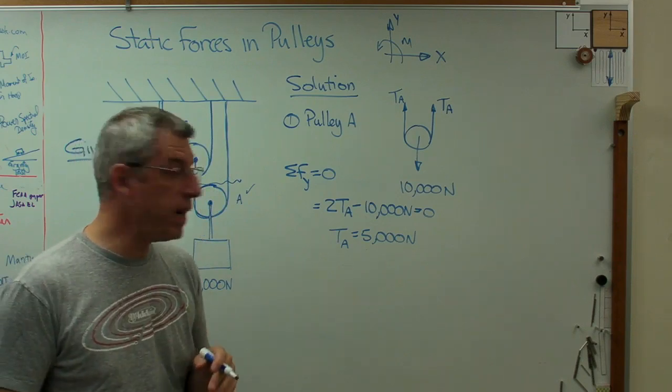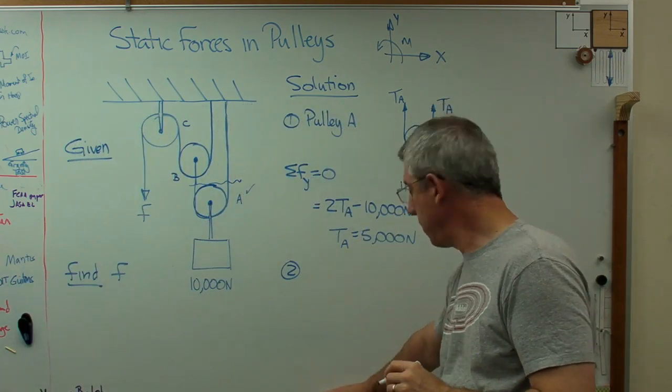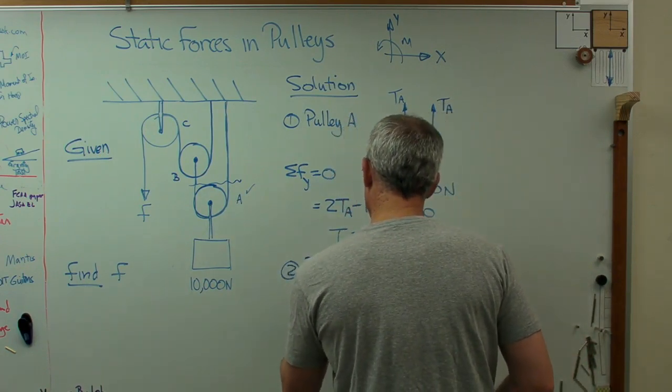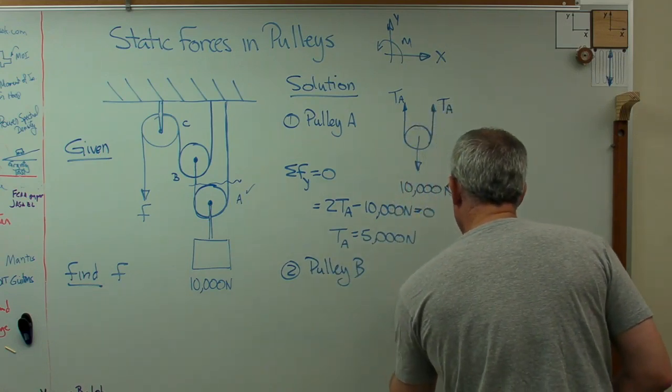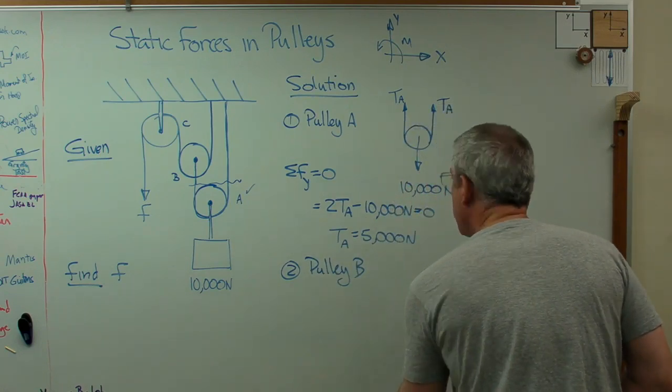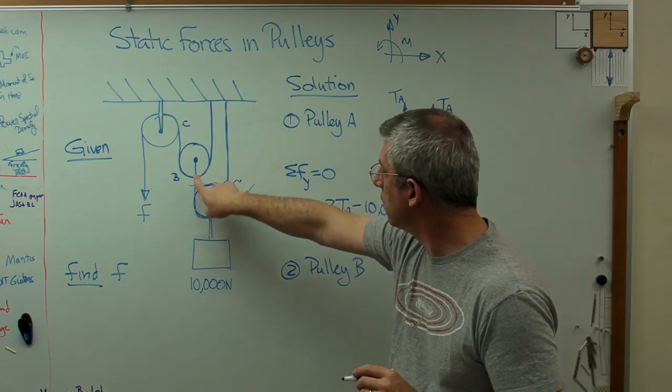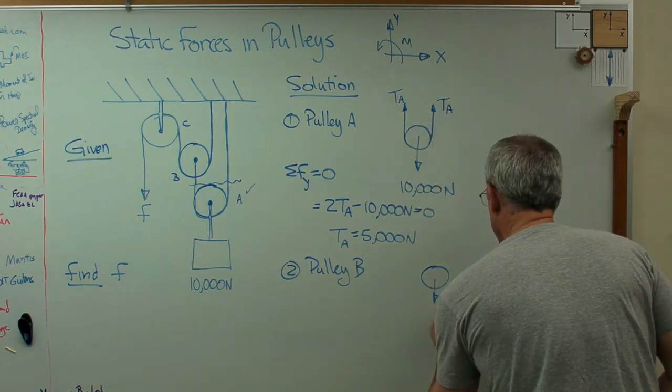Let's go to pulley B now. Make sure I can stay in frame here. So pulley B. I'm going to do the exact same thing. Only now, instead of the weight down, I have the force of the tension in the cable down. So that's 5,000 newtons. I know that.